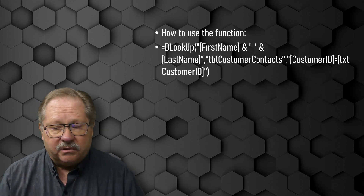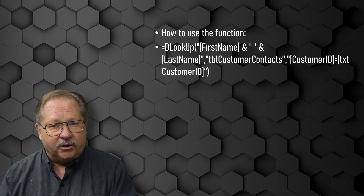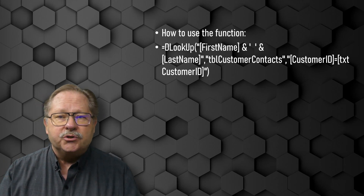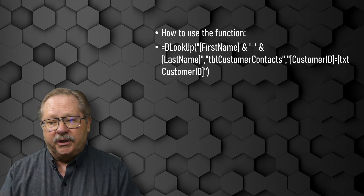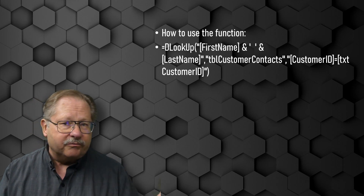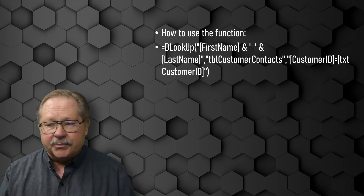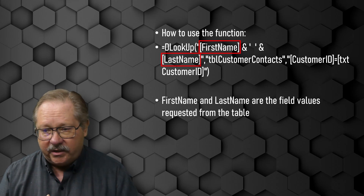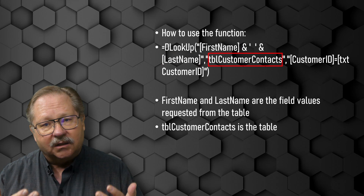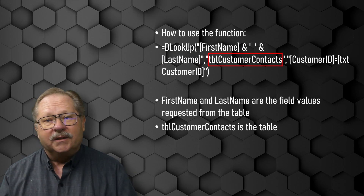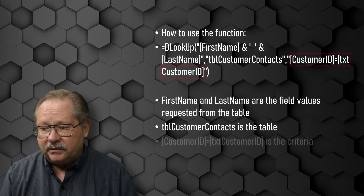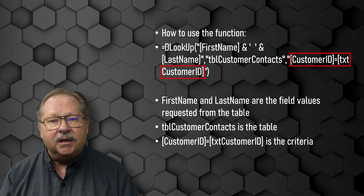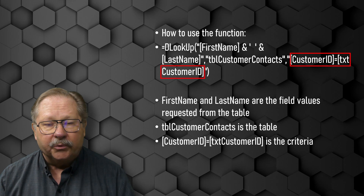So how do you use it? You have DLOOKUP with an open parenthesis, and in quotes you put the first part — the field you want to grab back. You may also include text you want between or in front of the fields. The second argument is the table or query you want the data to come from — either works. The last argument is the criteria; in this case, customer ID equaling a field on the form we're grabbing the data from.